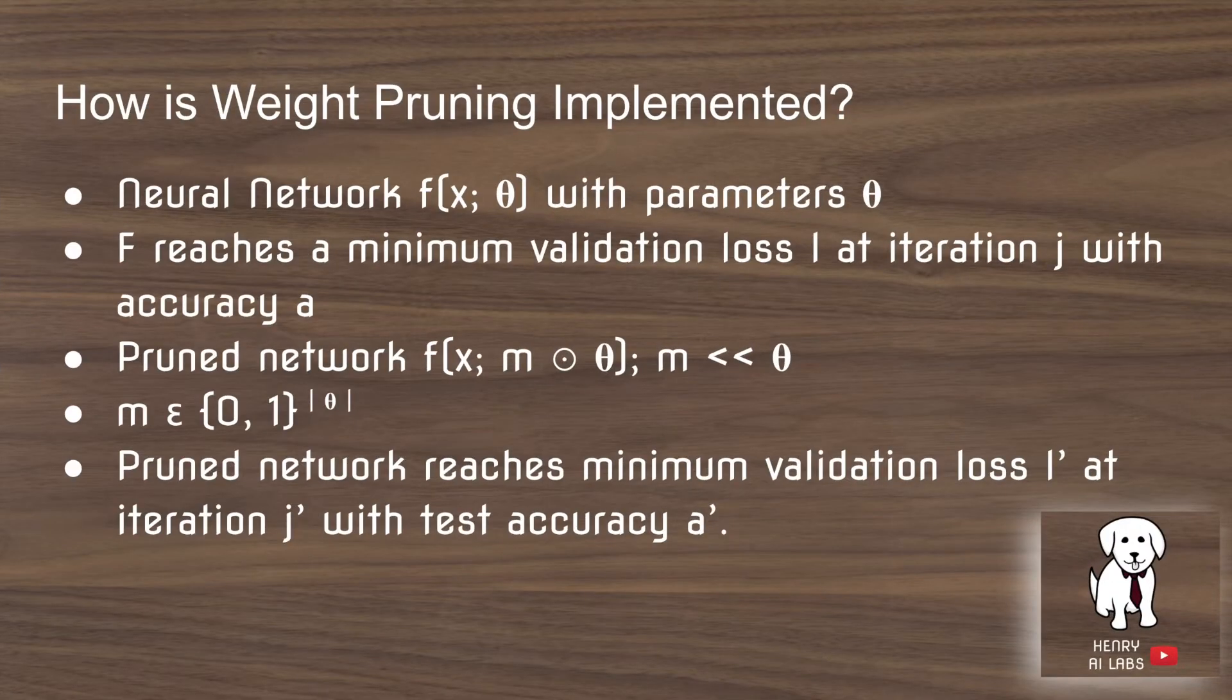So how is this implemented? You've got your neural network f mapping x to the class labels, parameterized by theta. f reaches some minimum validation loss at some iteration, and loss and accuracy are quite the same. So the pruned network is a mask over these weights theta, and the mask is much smaller. The mask can be represented in this format where the mask is either 0 or 1, binary. 1 meaning include the weight in the forward propagation, and 0 meaning completely ignore it. And it's the dimensionality of theta, meaning the number of parameters in the network. So what the lottery ticket does is the pruned network reaches the validation loss at iteration J prime with test accuracy A prime.